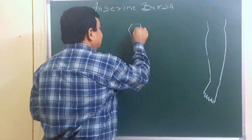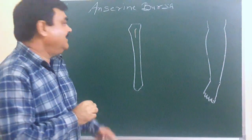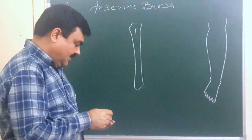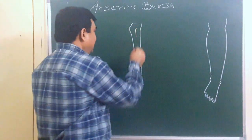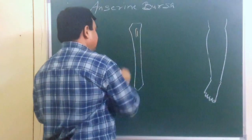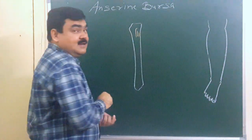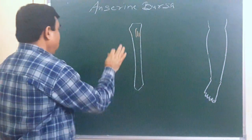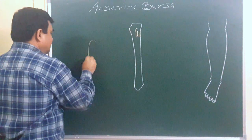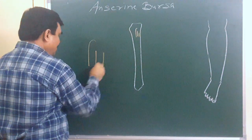In the condyle of the tibia, here is one muscle — the insertion of sartorius. There is another muscle — the insertion of gracilis — and this is semi-tendinosus. If you enlarge this: this is sartorius, gracilis, and semi-tendinosus.